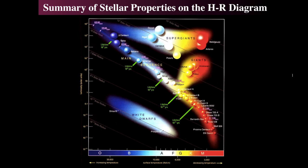There's an incredibly important element to the HR diagram, and that's the main sequence. The main sequence is where up to 80% of all the stars in the sky live. If you make this plot, the giants, supergiants, and white dwarfs are the minority — pretty much everything is on the main sequence. So let's see what the consequences of this observation are.